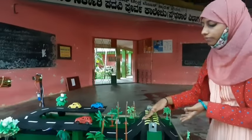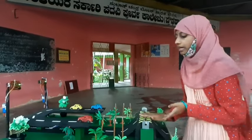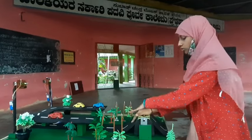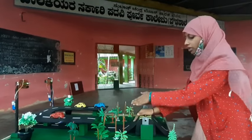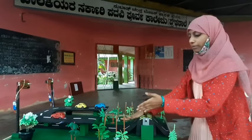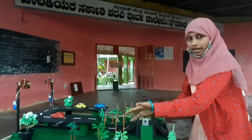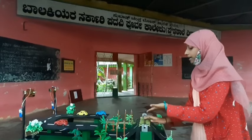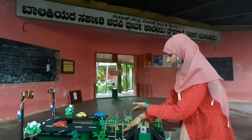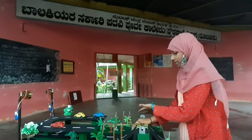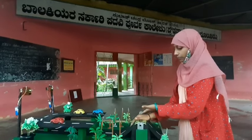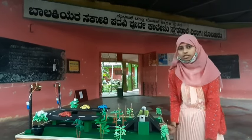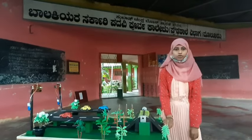If a vehicle is coming on this way, it gives a signal — please pay attention — the vehicle is coming, shown by glowing lights. If a vehicle passes through this side, it glows the lights and gives a signal: please pay attention, the vehicle is passing through it. This is my model. Thank you everyone.